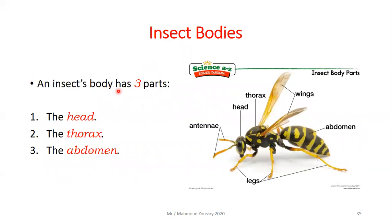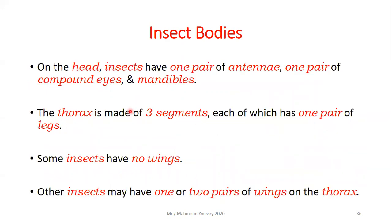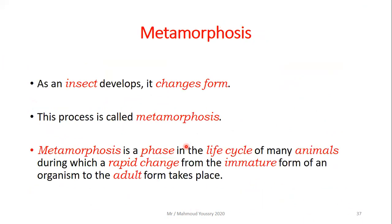The insect body has three main parts: head, thorax, and abdomen. On the head, insects have one pair of antennae, one pair of compound eyes, and mandibles for eating. The thorax is made of three segments, each with one pair of legs, giving insects six legs total. Some insects have no wings; others have one or two pairs of wings on the thorax.